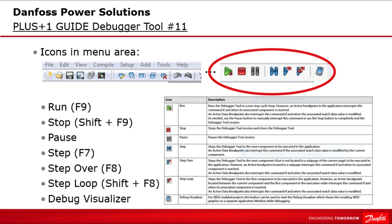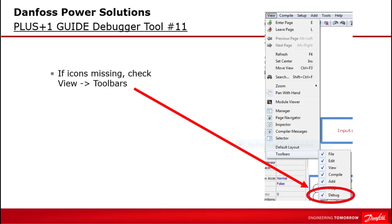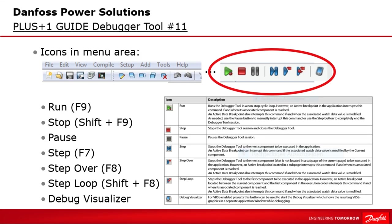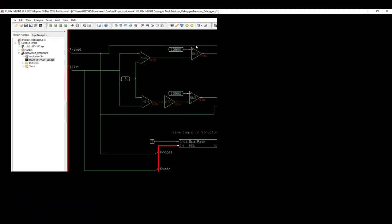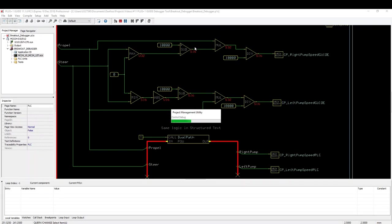If you can't find the toolbar in Guide it may have been hidden — via View > Toolbars you can enable or disable the debug toolbar. From the user point of view there are multiple buttons to start the debugger: Run F9, Step F7, Step Over F8, Step Loop Shift+F8, and the debug visualizer button. Any of these will start the debugger process. The first step will be for Guide to recompile the application and create a program executable, even if the code has already been compiled and no code change occurred.